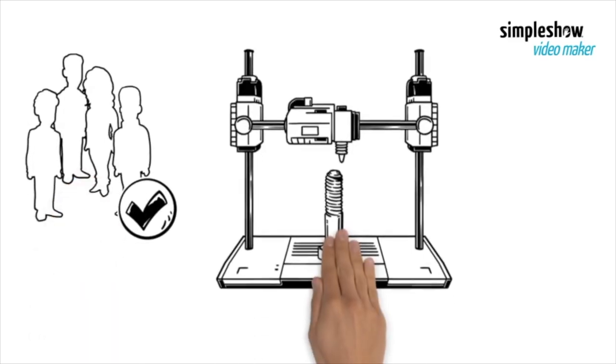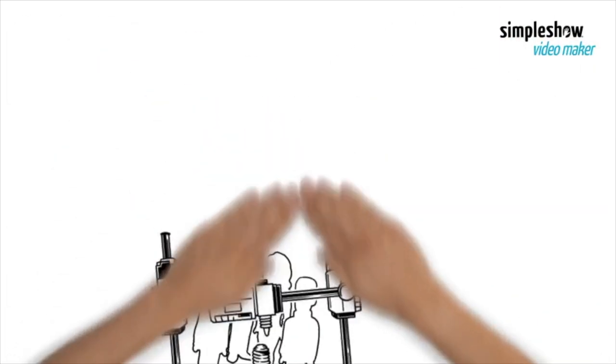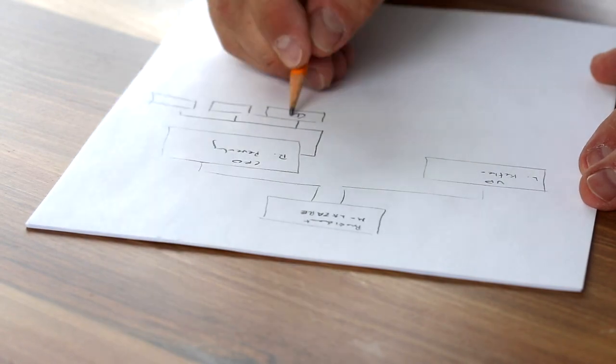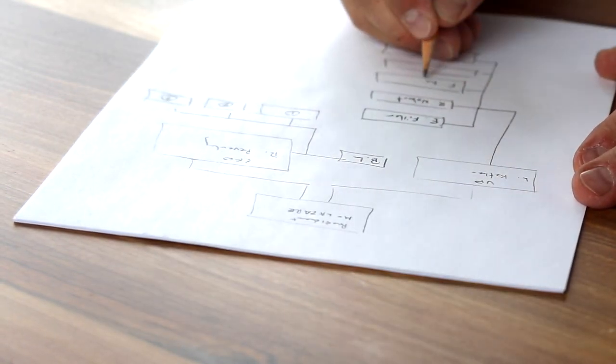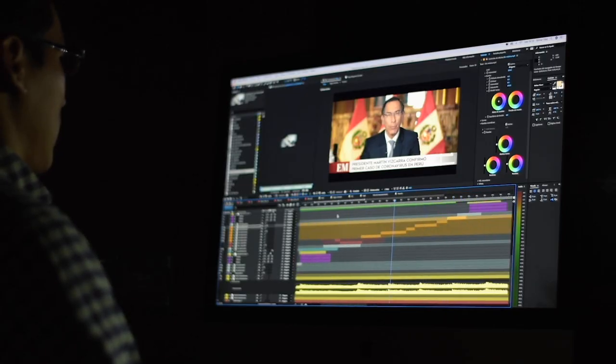In this criteria, students make a prototype or a model of their chosen design. Students need to make a plan that can be followed. Then they need to show proper, good technical skills.